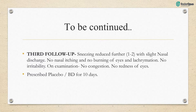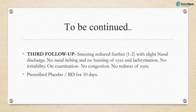The next question: what are the triggers of allergic rhinitis? Outdoor allergens such as pollens from trees, grass, and weeds, and mold spores; indoor allergens such as pet hair or dander, dust mites, and molds; and irritants like cigarette smoke, perfume, and diesel exhaust are the main triggers of allergic rhinitis.